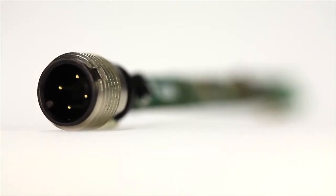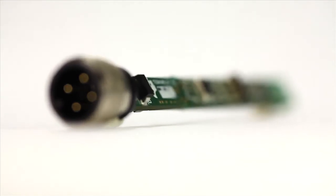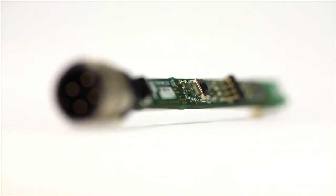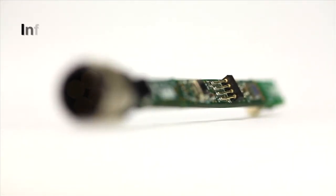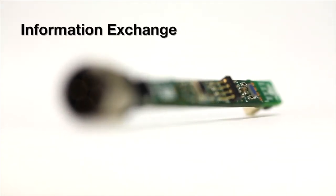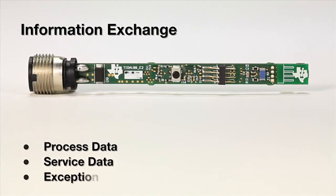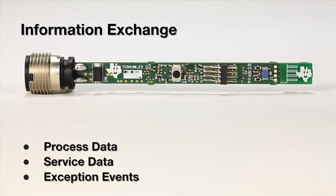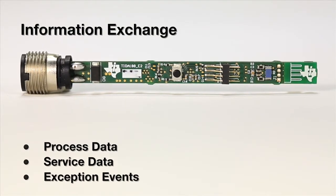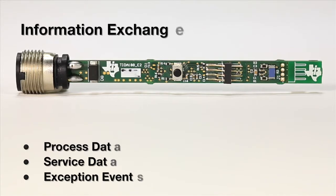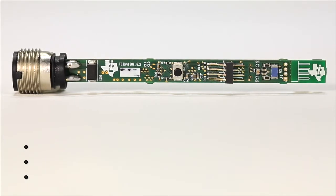IO-Link is a standard communications protocol used to link with sensors and actuators. It allows several types of information to be exchanged, such as process data, service data, and exceptional events such as alarms and other monitoring information.